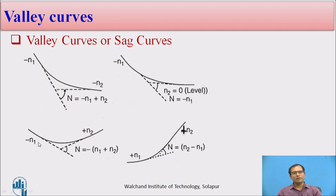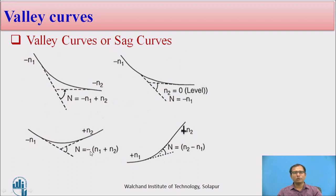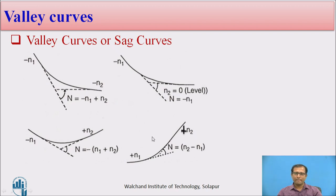Another case: a descending gradient meeting an ascending gradient, that is minus N1 plus N2, so the deviation angle N equals minus N1 plus N2. A descending gradient meeting a perfectly level ground where N2 equals 0 gives N equals minus N1. And for an ascending gradient meeting another ascending gradient plus N2, N equals N2 minus N1.